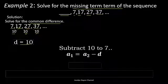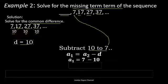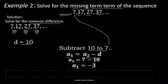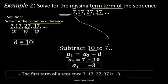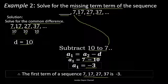Now that we have the common difference, we subtract 10 from 7. By formula, the first term equals a sub 2 minus the common difference, so 7 minus 10 equals negative 3. Therefore, the first term of the sequence 7, 17, 27, 37 is negative 3.